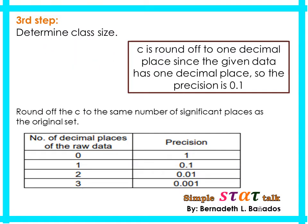The third step is to determine the class size, represented by letter C. The formula is range divided by k. From our previous calculation, the range is 16.3 and k is 5. So 16.3 divided by 5 gives 3.26, or 3.3. In our previous example, we rounded the class size to a whole number.